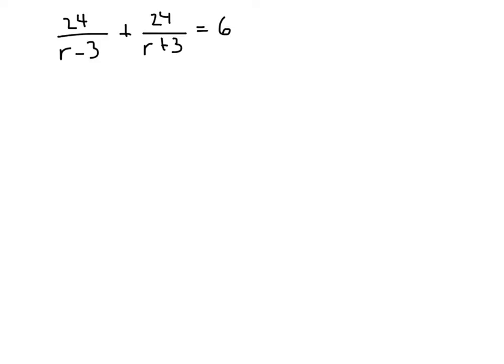So what we're going to do is we're going to multiply both sides by something that's going to clear out those denominators. In this case, we're going to multiply both sides by r minus 3 times r plus 3. And a whole bunch of stuff is going to happen, so let's try to follow through here. So when we multiply this fraction by r minus 3 times r plus 3, the r minus 3's will divide out. And so what we'll be left with is 24 times the quantity r plus 3.